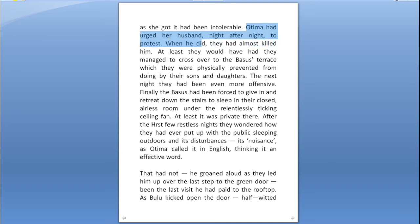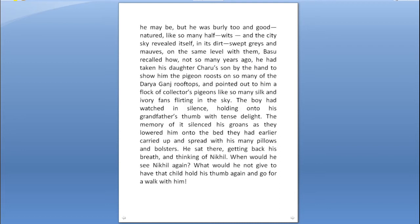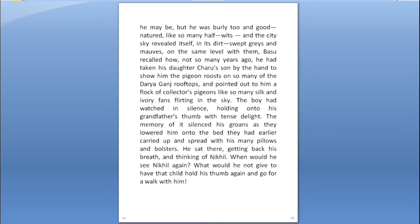Otima had urged her husband night after night to protest; when he did, they had almost killed him. So the husband is timid and lacks courage — because of the quarrel they had stopped sleeping on the terrace. We also get a flashback about their grandson Nikhil when they take him to the terrace. Basu, regaining his breath, thinks of Nikhil: 'When would he see Nikhil again? What would he not give to have that child hold his thumb again and go for a walk with him?' The child is a symbol of happiness; he is nostalgic, showing the difference between their present agony and their past happiness.